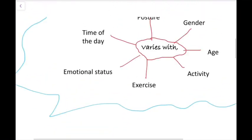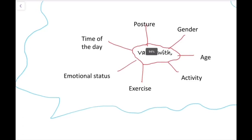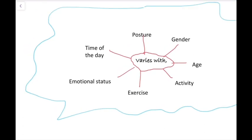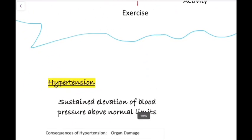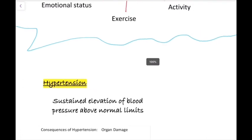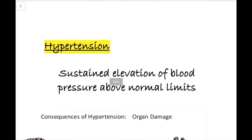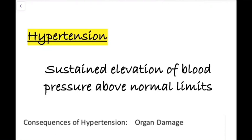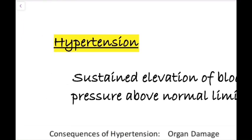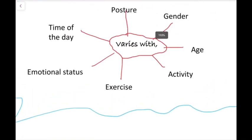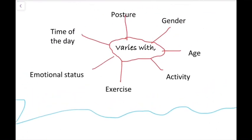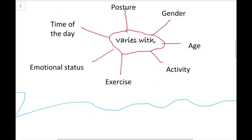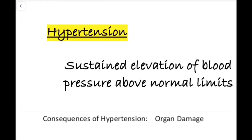Next we need to know about abnormalities. Blood pressure can be higher than normal — this is known as hypertension — or lower than normal, which is called hypotension. Hypertension is defined as a sustained elevation of blood pressure above normal limits. The word 'sustained' is important: even though blood pressure can increase at different times of the day, if it remains elevated for a long time, we call it hypertension.